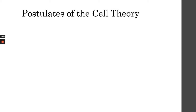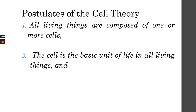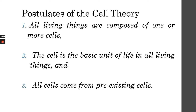That's how we came up with the postulates of cell theory. Because of the discoveries of these various scientists, we summarized them into three main postulates. Number one: all living things are composed of one or more cells — humans are multicellular, while organisms like prokaryotes are composed of only a single cell. Number two: the cell is the basic unit of life in all living things, meaning all life must have cells. Number three: all cells come from pre-existing cells.